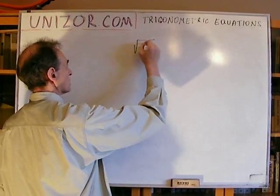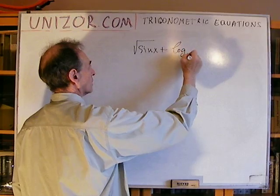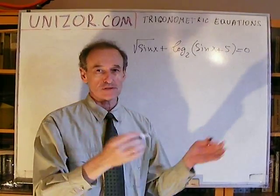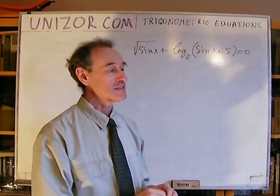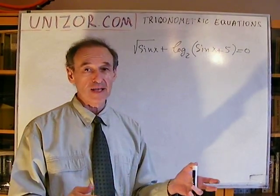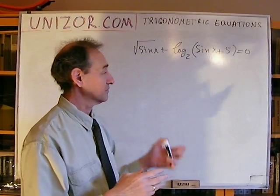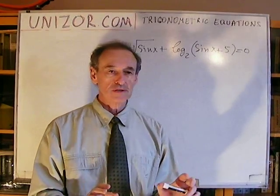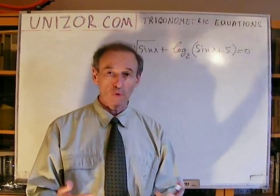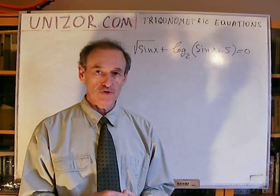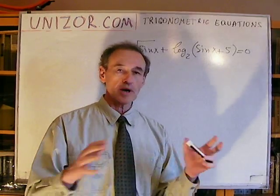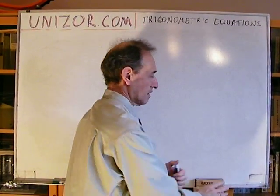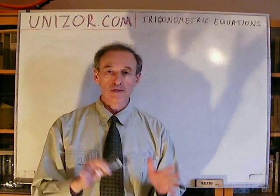There are obviously much more complicated equations which can also be called trigonometric equations — something like the square root of sine x plus log base 2 of sine x plus 5 equals 0. That looks very complicated and I don't even know how to solve it. But that's not what I want to present right now. I want to present simple trigonometric equations which we can solve analytically, coming up with a formula as the solution, and then gradually increase the complexity.